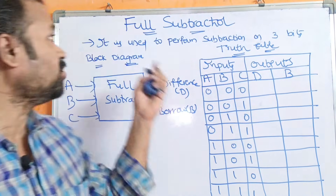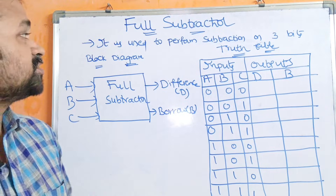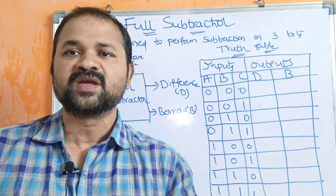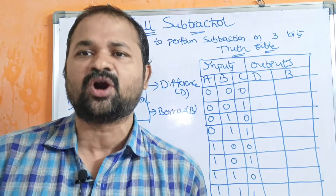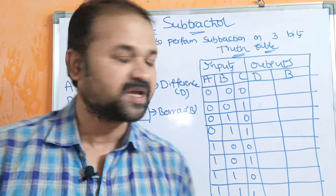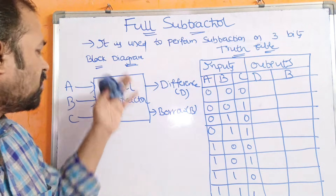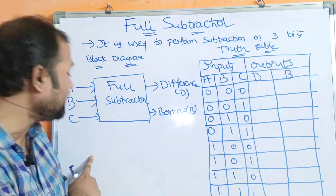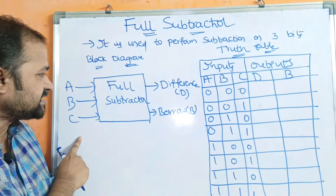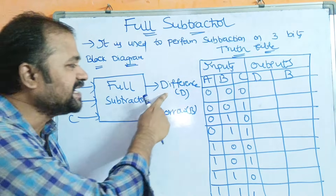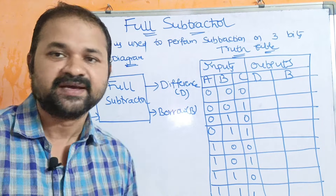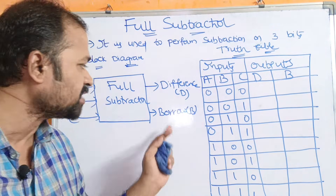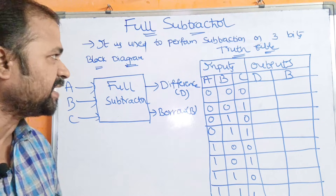Let us discuss the full subtractor. It is mainly useful to perform subtraction operation on 3 bits. The full subtractor accepts 3 inputs: A, B, and C, and it produces 2 outputs: difference and borrow. Difference is denoted by D and borrow is denoted by B.